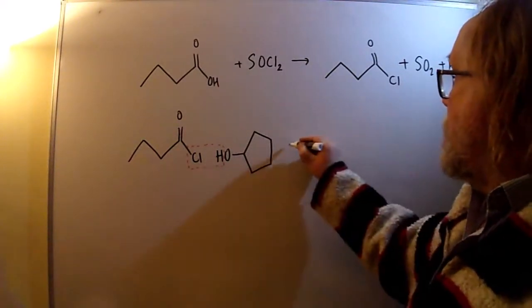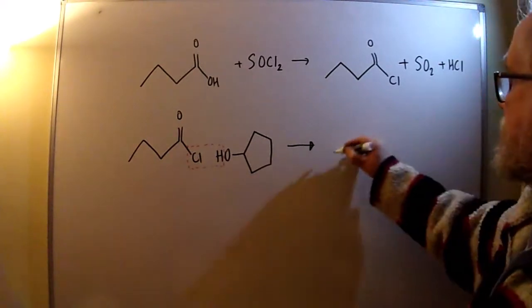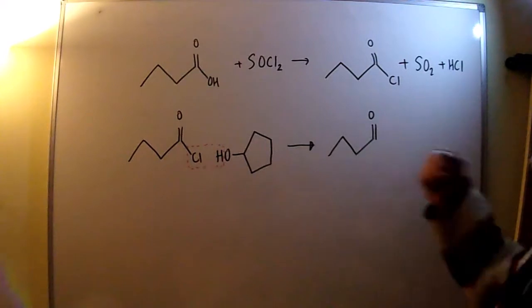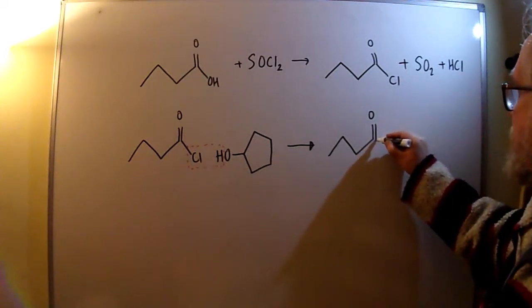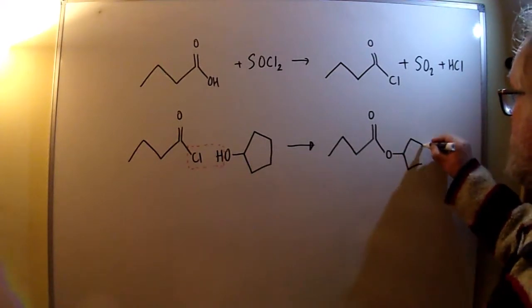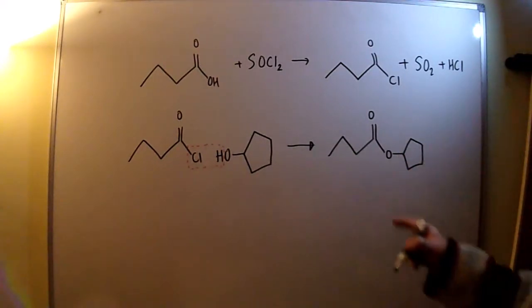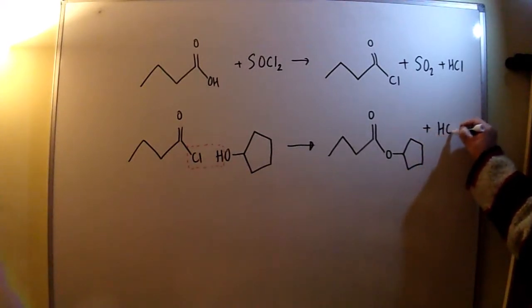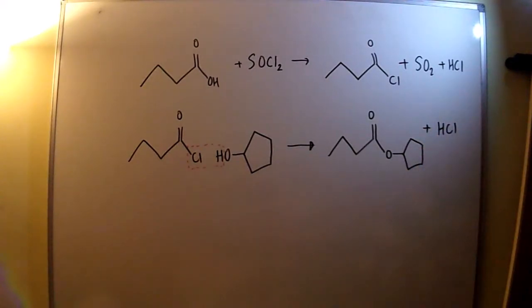So this is, remember, one of the alternative ways to make esters - rather than using the carboxylic acid, which gives you a reversible reaction that needs concentrated acid catalyst, this one just goes all on its own at room temperature, no catalyst needed. So there's the ester joined up, and again, the other product this time is HCl.